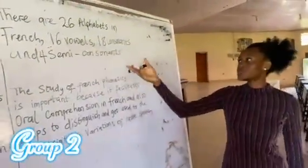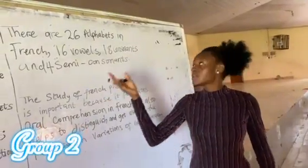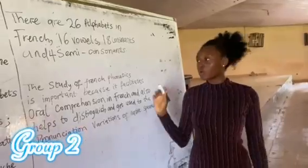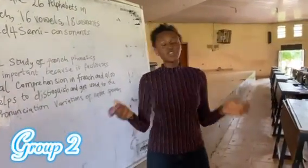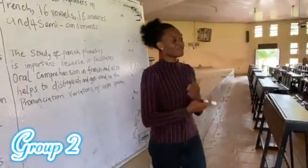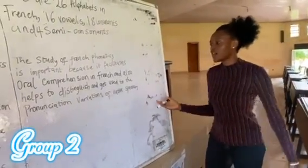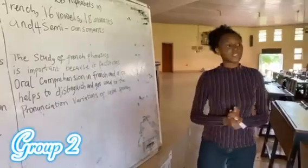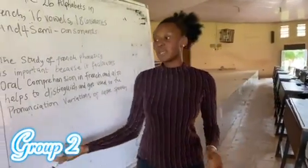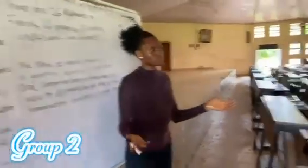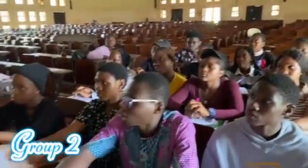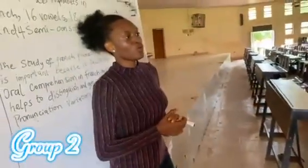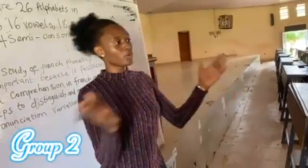It is important to note that in French we have 26 alphabets, just like in the English language — 26 alphabets, 16 vowels, 18 consonants, and 4 semi-consonants. In conclusion, the study of French phonetics is important because it facilitates pronunciation and comprehension in French, and also helps us get used to the pronunciation variations of native speakers. We have come to the end of this video. Do we have any questions or contributions? On this note, we will be ending the video here. Merci beaucoup. Thank you everyone.